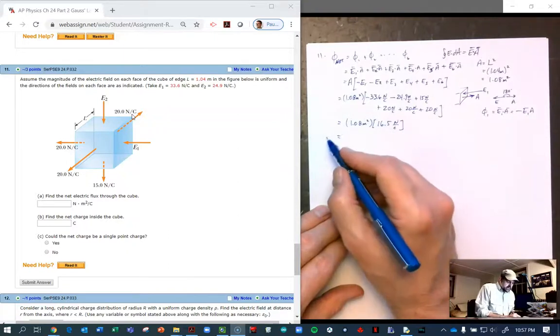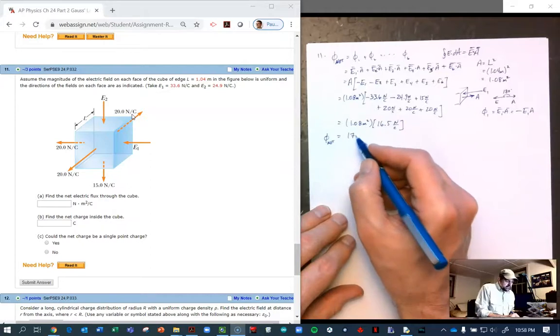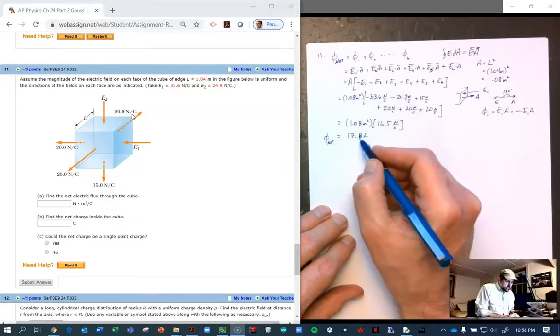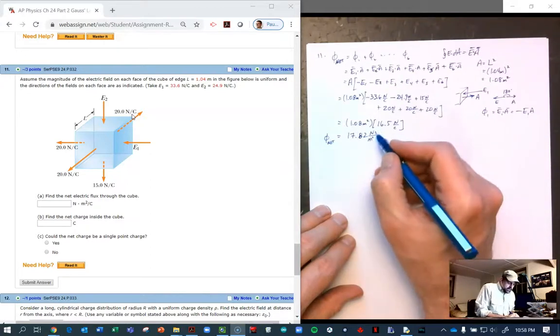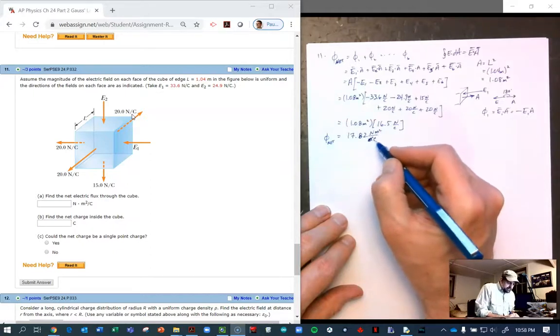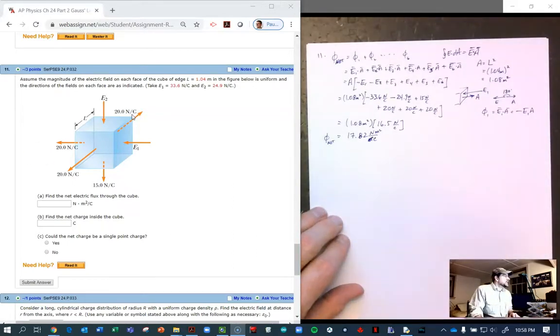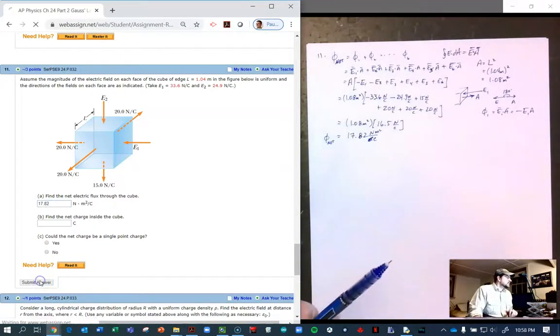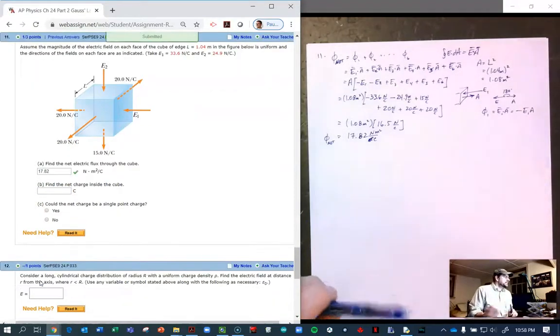And so when you multiply it out, this is the total net flux. It's going to equal 17.82 newton meter squared per coulomb. And so when we type that in, let's see if that works, 17.82. Yay.